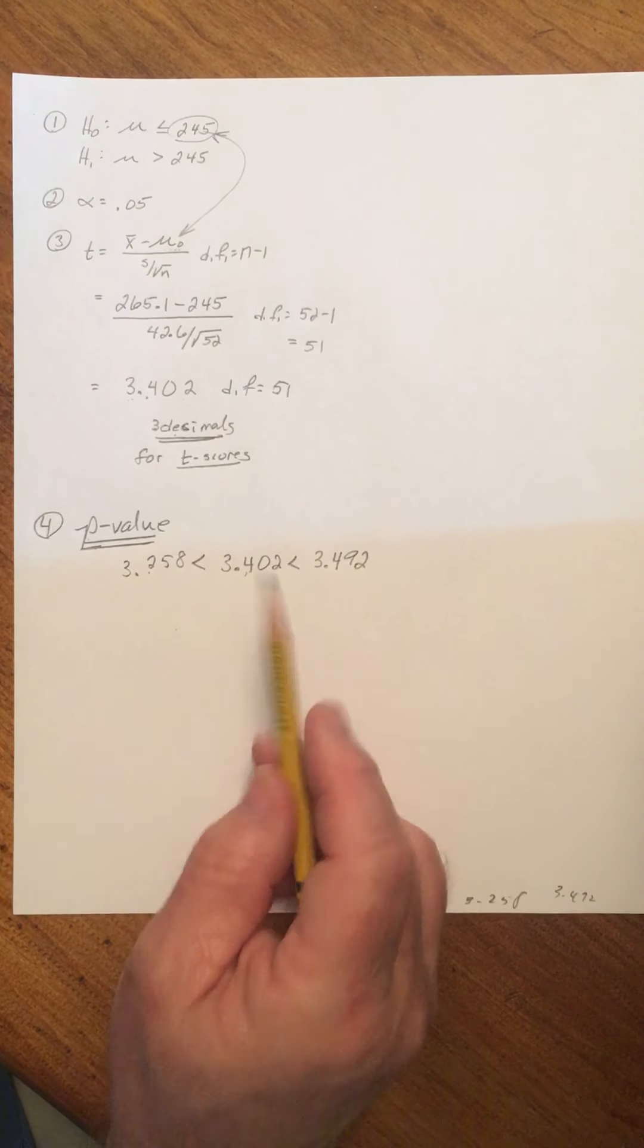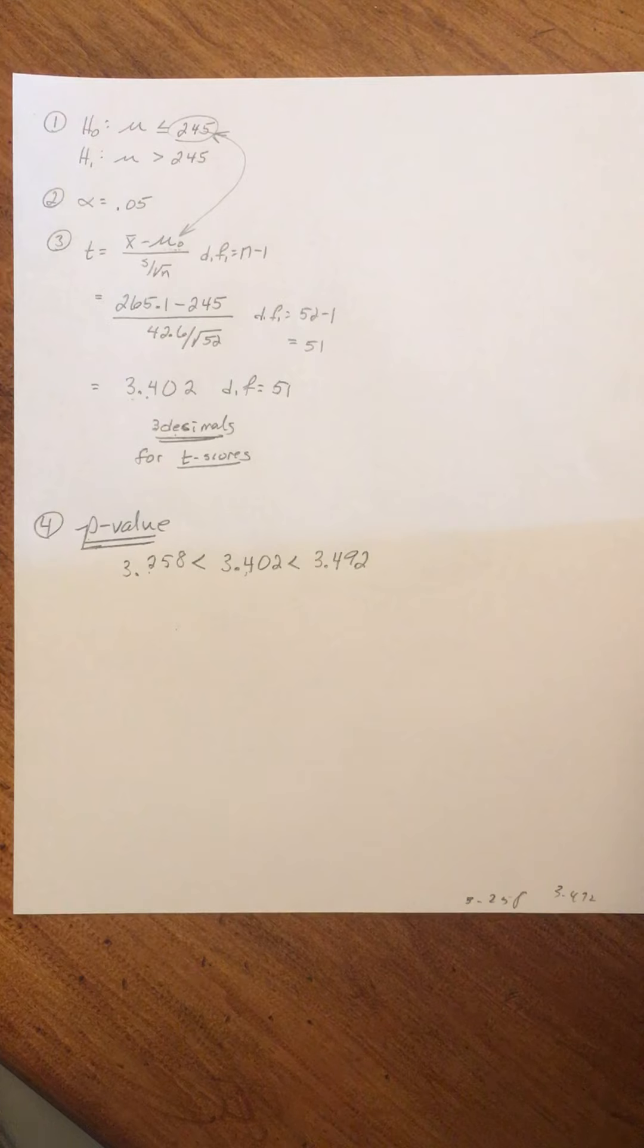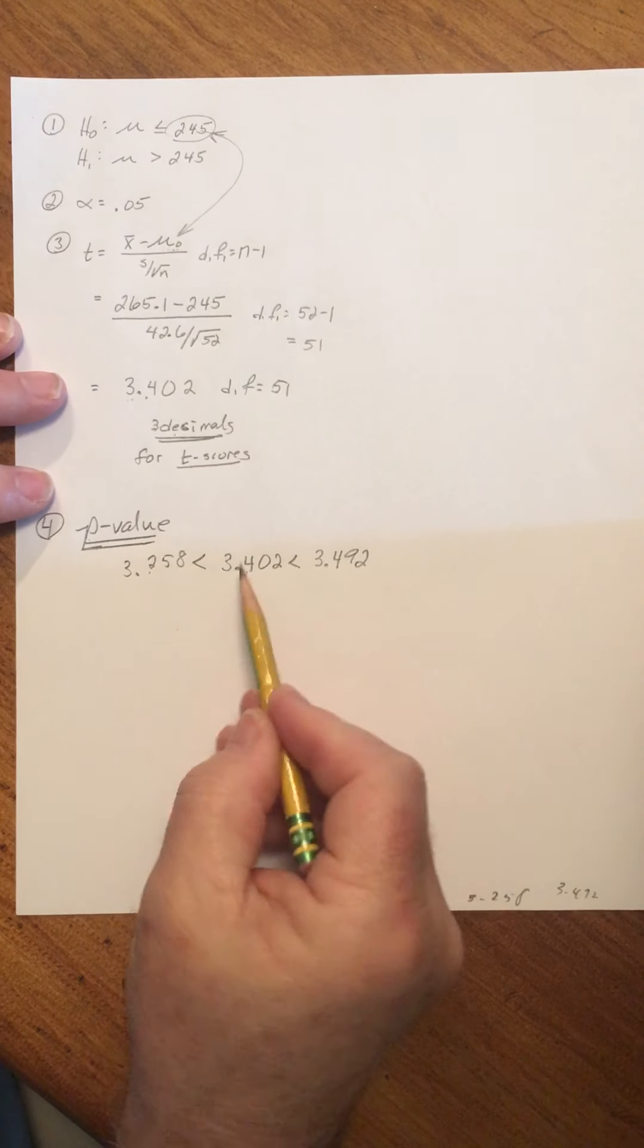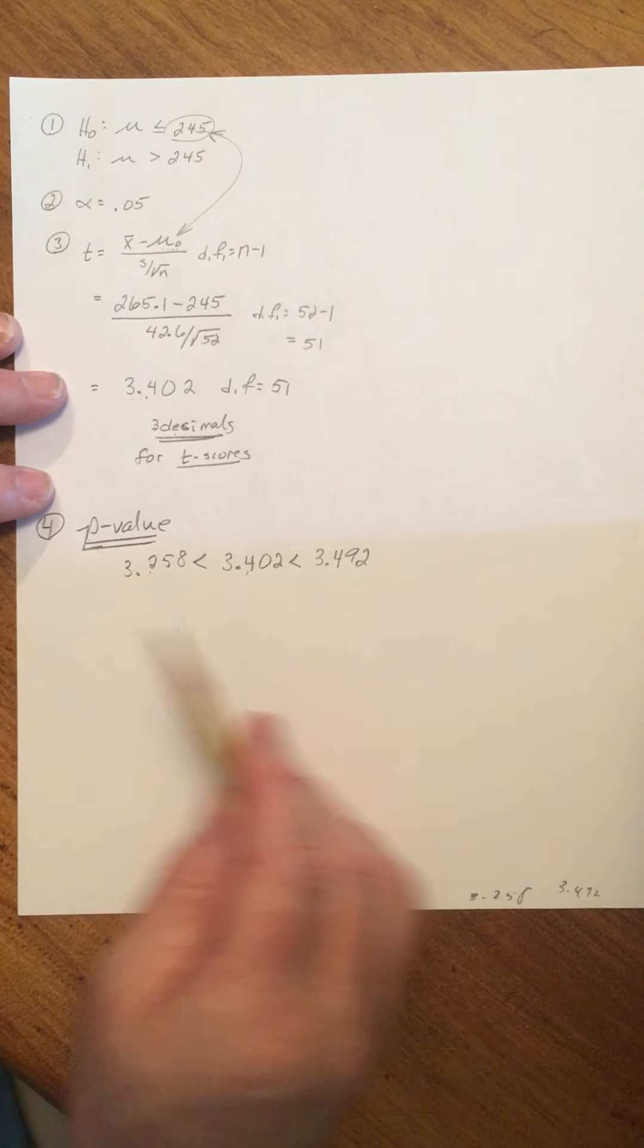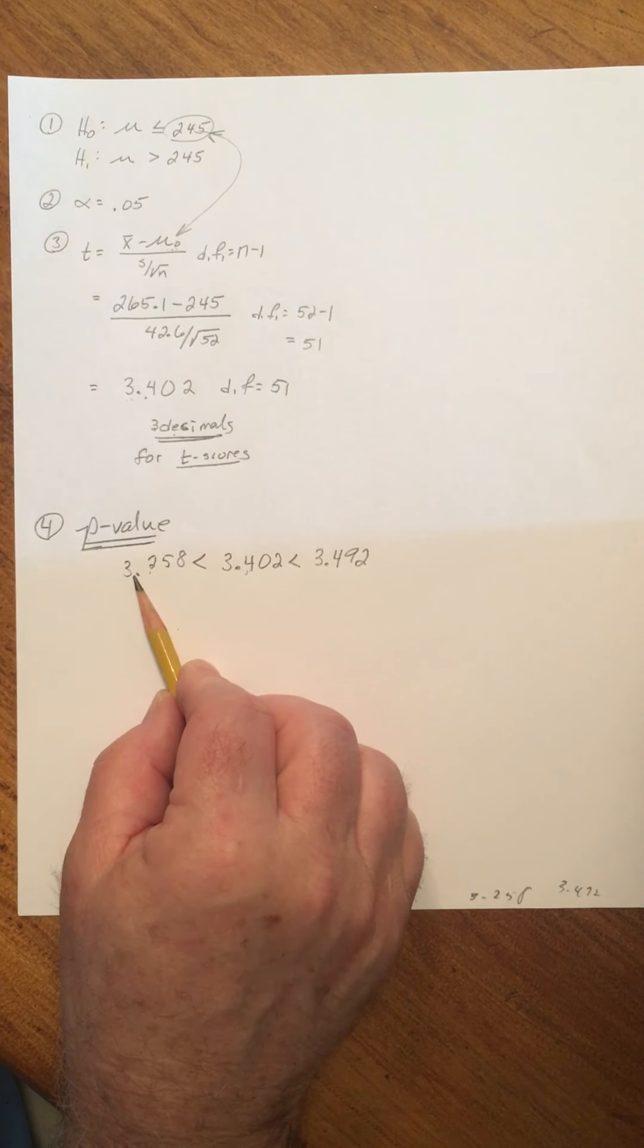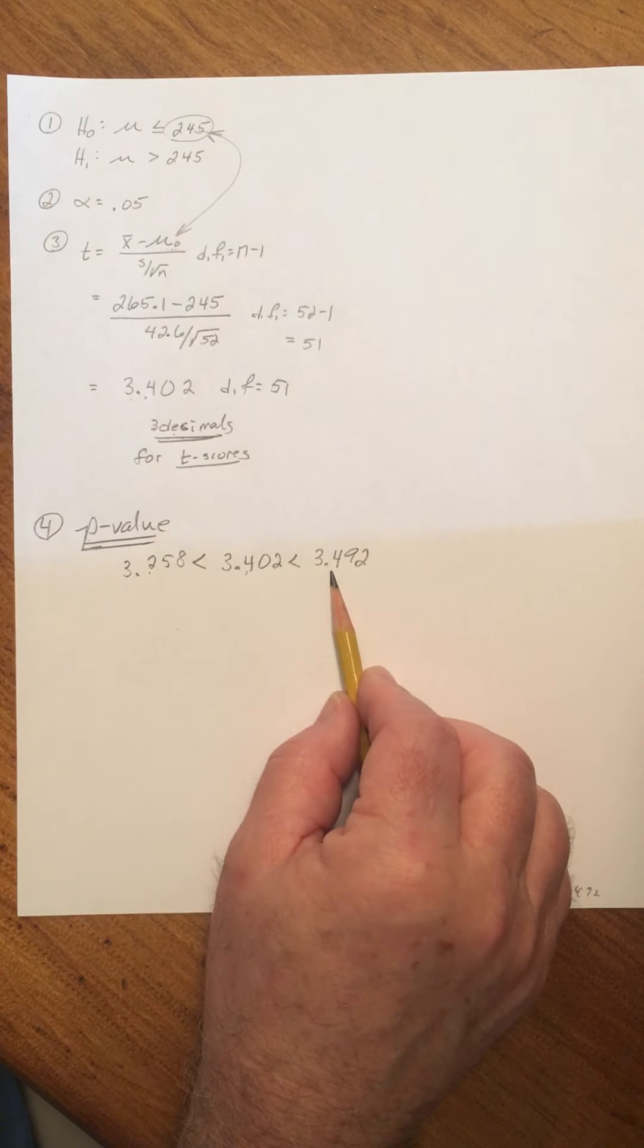There are a couple what-ifs. We'll cross those bridges when we come to them. But for now, find the two numbers between which it falls. So it falls between 3.258 and 3.492.